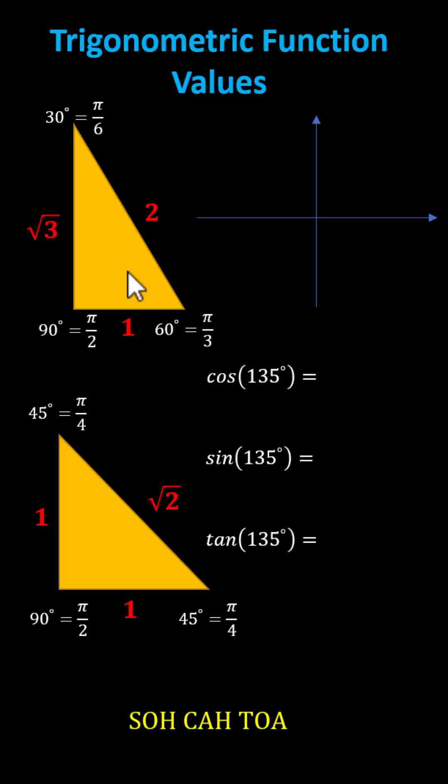We begin by sketching 135 degrees in standard position. We sketch the initial side along the positive x-axis, and now we rotate counterclockwise 135 degrees. We rotate to the positive y-axis, we have 90 degrees. We need to rotate 45 degrees more counterclockwise for the terminal side of 135 degrees.